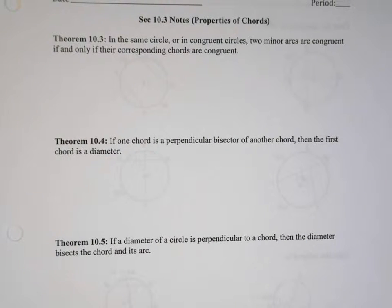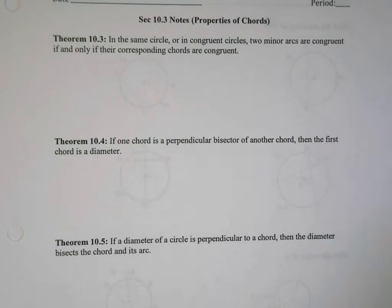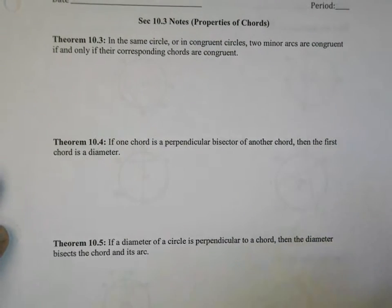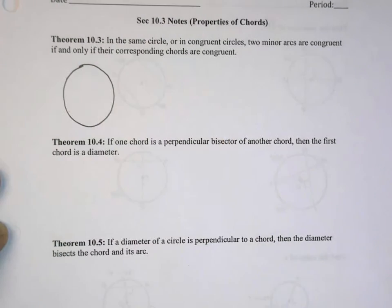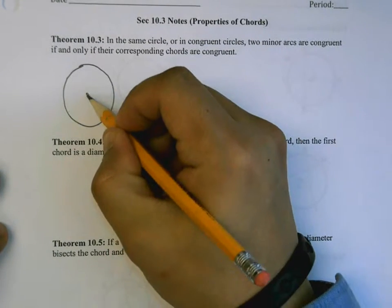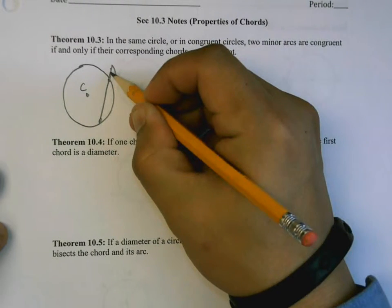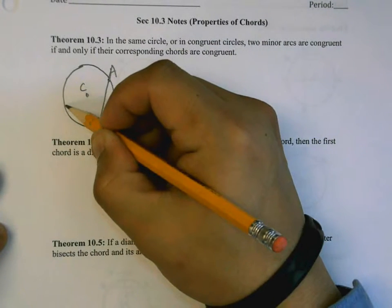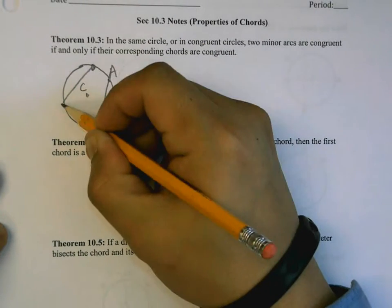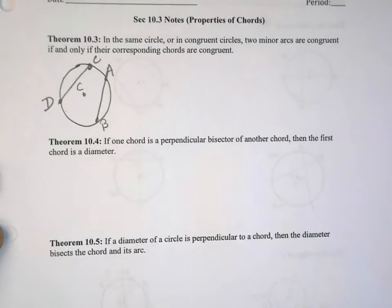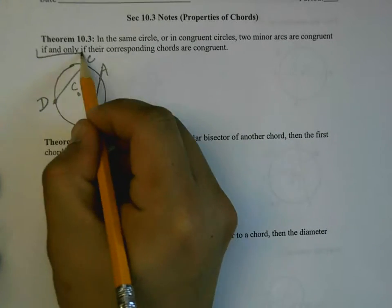We're going to get started by proving a bunch of theorems, but first I'm going to explain what the theorem is saying, and then we'll spend some time proving it. The first one says: in the same circle or congruent circles, two minor arcs are congruent if their corresponding chords are congruent. Let's start with a picture — here's my circle, let's call this C, and let's make a couple of chords: call this AB and another chord CD.